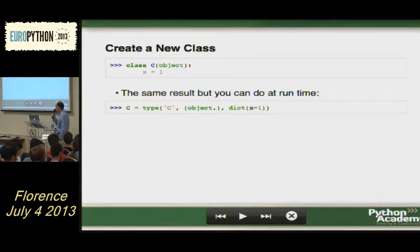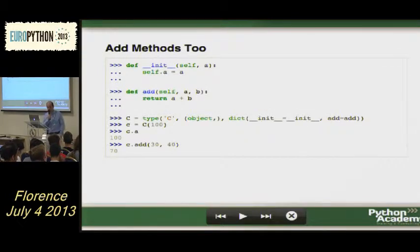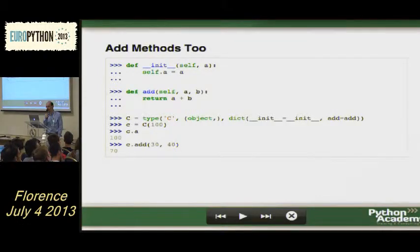That means you can do it dynamically — you can generate lots of classes without typing them into source code. You can also have methods. You define some methods, insert them in the dictionary, and you have a fully working class. And you see it's a type.